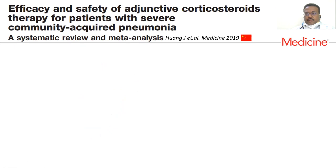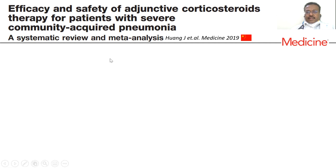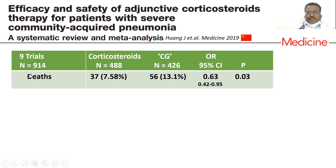Moving to the studies — I will focus on recent meta-analyses, as there are more meta-analyses and systematic reviews for this topic than actual RCTs. The most recent is Hwang et al., on efficacy and safety of adjunctive corticosteroids for severe community-acquired pneumonia, published in a medicine journal. This trial looked at nine trials comprising 914 patients — 488 in the corticosteroid group and 426 in the control group. Deaths were significantly less in the corticosteroid group, with a statistically significant confidence interval.